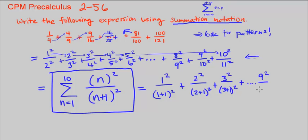So we get 9 squared over 9 plus 1 squared. Plus n is 10. And we're done. So it is that.